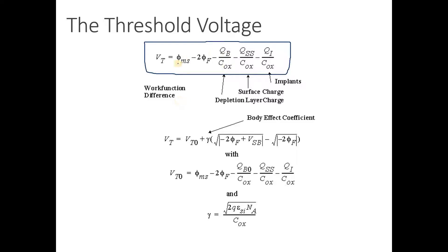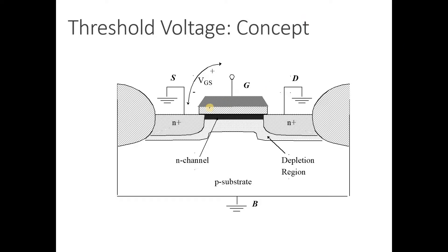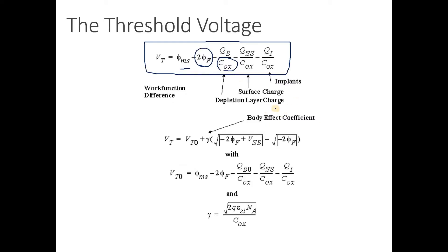Your threshold voltage is basically a function of work function difference — this is the flat band voltage — plus 2φF (twice the potential). The term 2φF represents twice the difference of the Fermi level voltage from one band to another, because the energy band diagram has moved twice. There is also a depletion layer charge and oxide capacitance component. The gate, channel, and oxide form a capacitor structure.